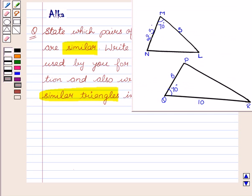We are given the figure where MNL is a triangle with angle M equal to 70 degrees, side MN equal to 2.5, and ML equal to 5. Another triangle PQR has angle Q equal to 70 degrees, side PQ equal to 6, and side QR equal to 10.